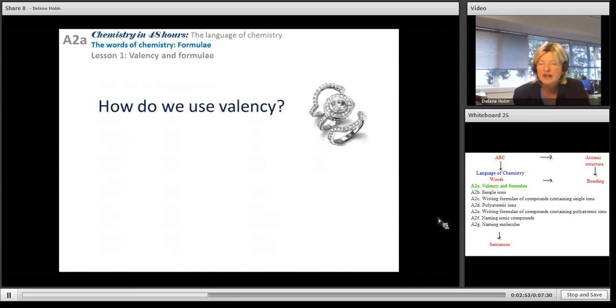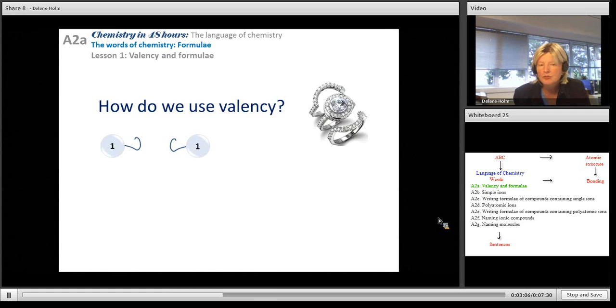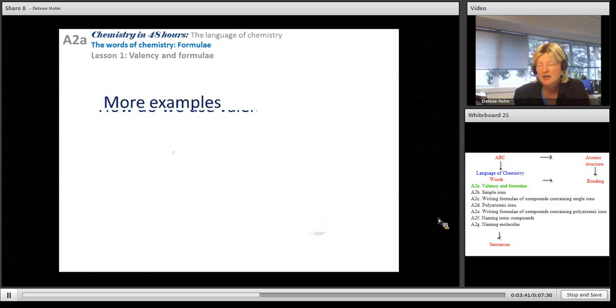Now how do we use the valency? I've drawn little hooks to represent the valency. If all those hooks are held, that compound will be stable. If I have two elements with a valency of 1, they will combine in a 1 is to 1 ratio. If I have two elements with a valency of 2 each, they combine in a 1 is to 1 ratio. But if I have an element with a valency of 2 and an element with a valency of 1, I'm going to need another of the blue elements to make sure all those hooks are being held. So I have a ratio of 1 is to 2.